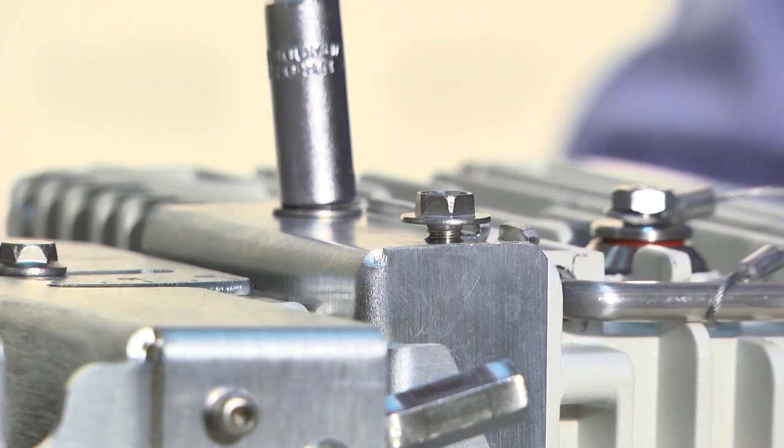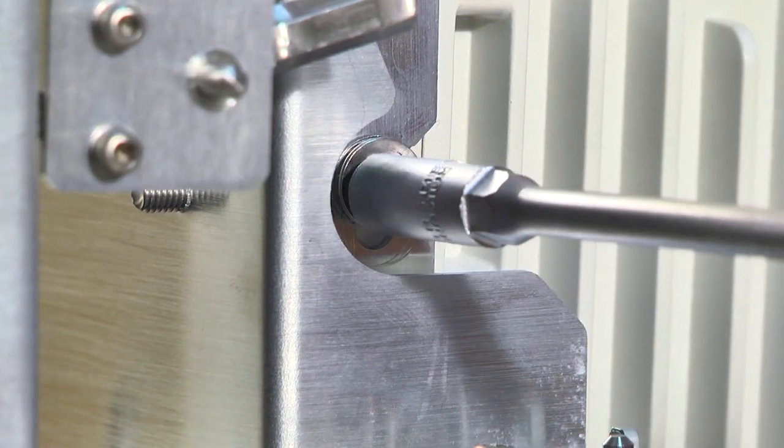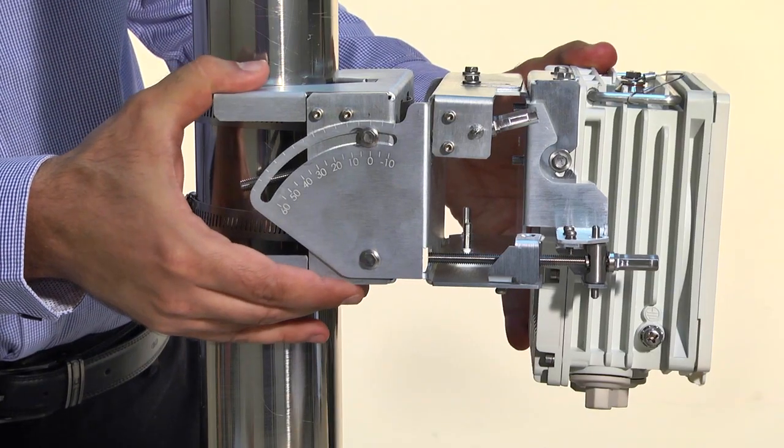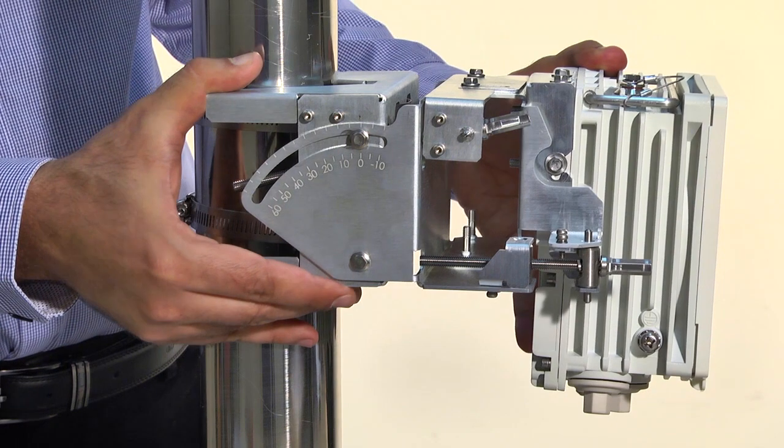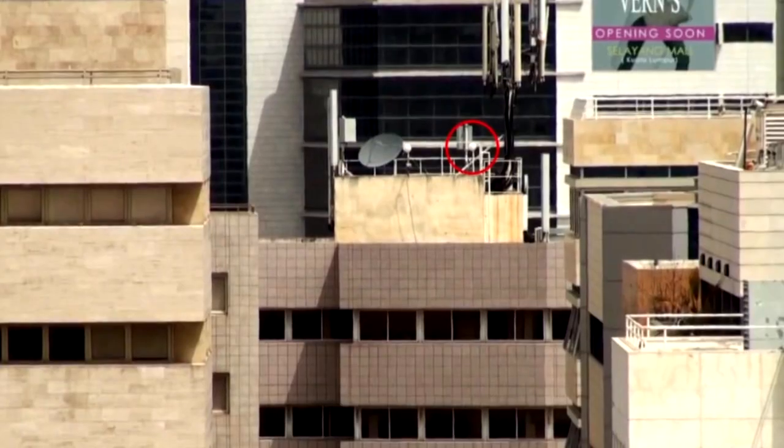Attach the ODU to the bracket by fastening the 3 hex bolts at the upper left side of the ODU to the mounting kit. At this point, the ODU should be pointing roughly in the direction of the remote ODU. Perform a visual line-of-sight check to confirm this.